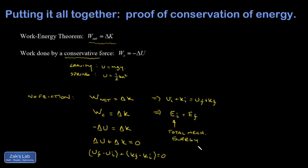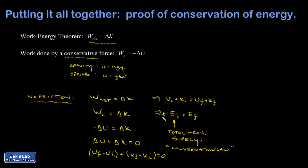The total mechanical energy of the system is constant, provided there is no friction. This is a conservation law. Rather than analyzing every detail of the motion with forces and accelerations, we have identified a physical quantity that stays constant throughout the process — and that is the tool we use to answer the questions we're trying to answer.